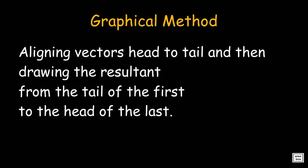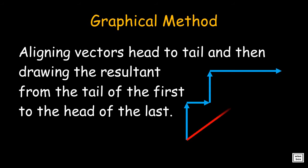The graphical method is used by aligning vectors head to tail, and then drawing the resultant from the tail of the first to the head of the last.